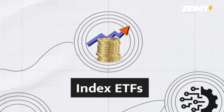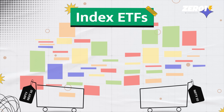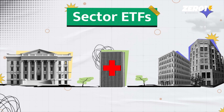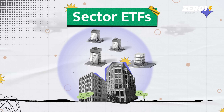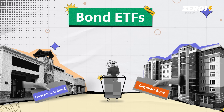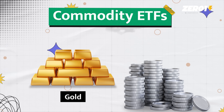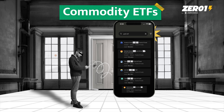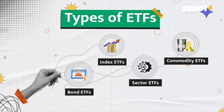ETFs aren't just for gold — think of ETFs like a structure and you can put anything in that structure. You have index ETFs that track a specific market index like Nifty 50 or Next 50, giving broad exposure. Then sector ETFs focus on specific industries like IT, healthcare, or financial services. Bond or debt ETFs invest in government or corporate bonds and are usually less volatile. And finally, commodity ETFs invest in physical commodities like gold or silver, giving exposure without directly buying physical goods.